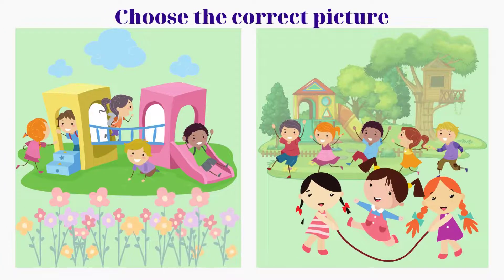Listening and choose the correct picture. Hello, can you see Anna? Yes, she is skipping now with her friends. Where are they? They are in the playground.